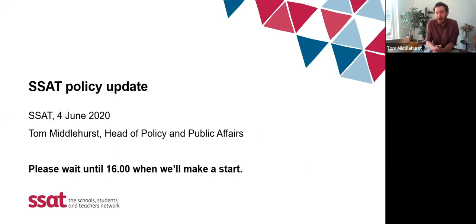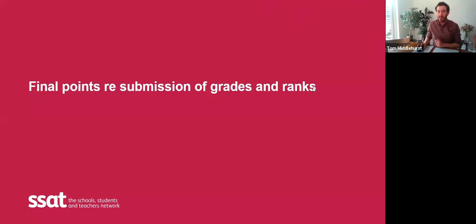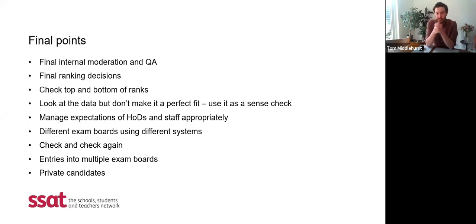Other colleagues will be picking up issues about school reopenings later this month — secondaries on the 15th of June — and what's already happening in primaries, but that will be picked up elsewhere. So without further ado, let's think about the final checks that need to be in place for submissions in the next couple of weeks. You'll all be doing your final internal moderation and quality assurance, and I've had lots of questions about what it should look like. The simple answer is there is no one fixed way — use your current QA processes as an SLT to ensure senior leaders are happy that the grades and rankings submitted are rigorous and accurate, and you'll be making those final ranking decisions.